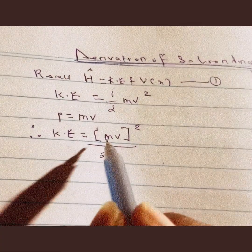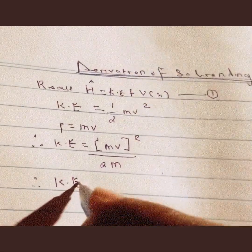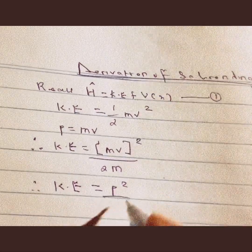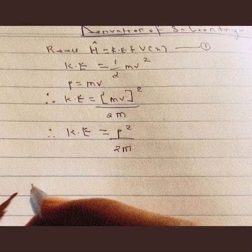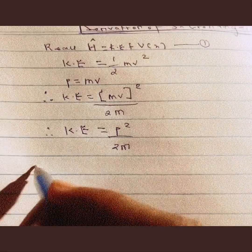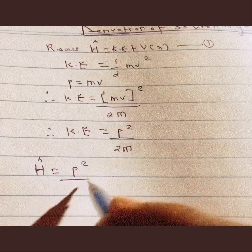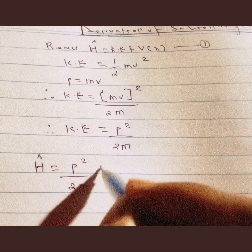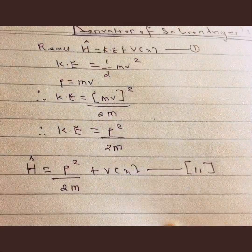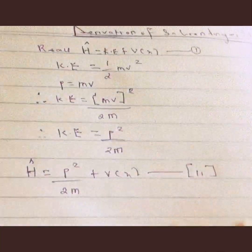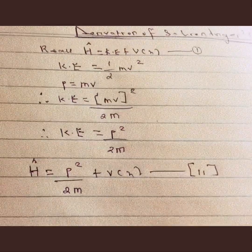Since mv is the same as momentum p, we can rewrite the kinetic energy of a macro object to be equal to p² over 2m. So we can rewrite equation 1, the Hamiltonian operator, as equal to p² over 2m. It is just a rewrite of the equation with respect to the momentum of the macro body.